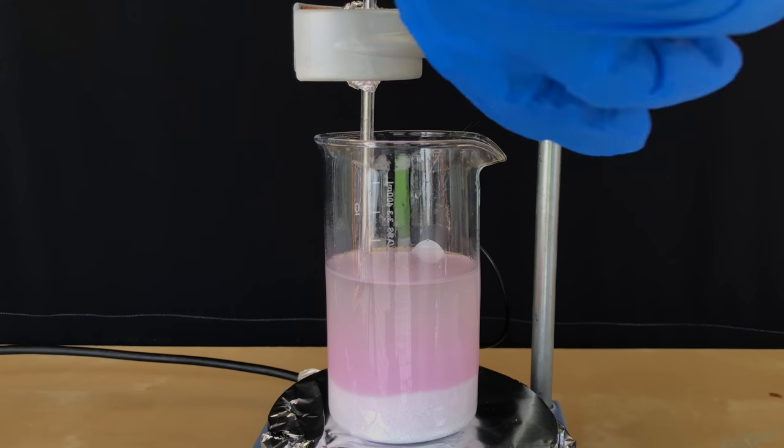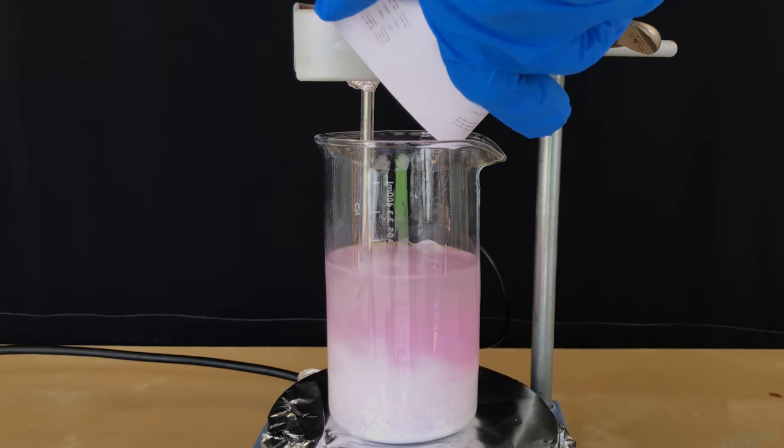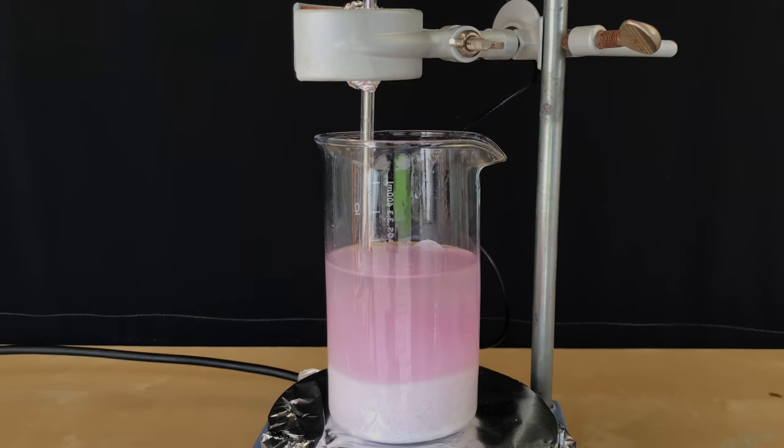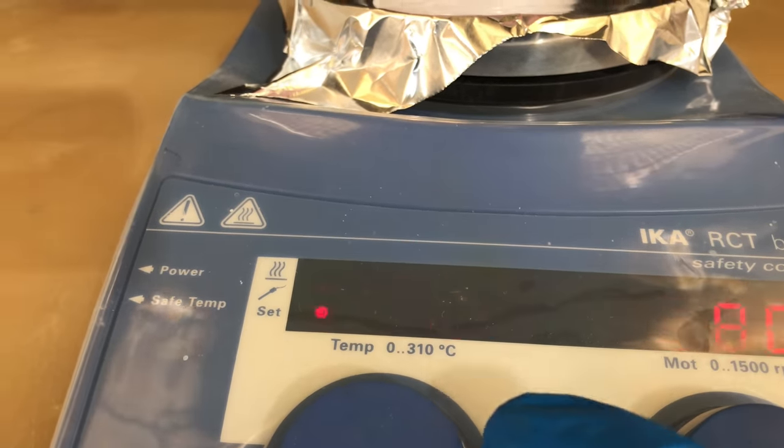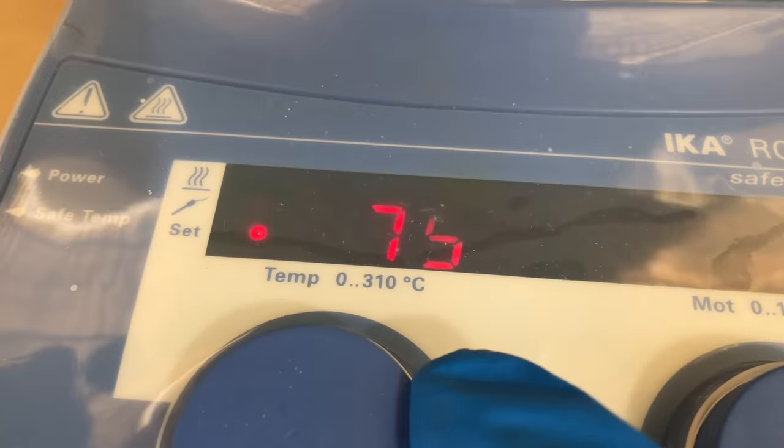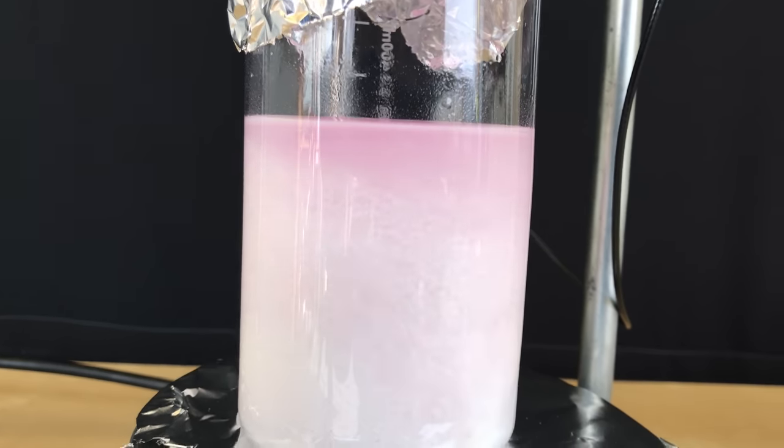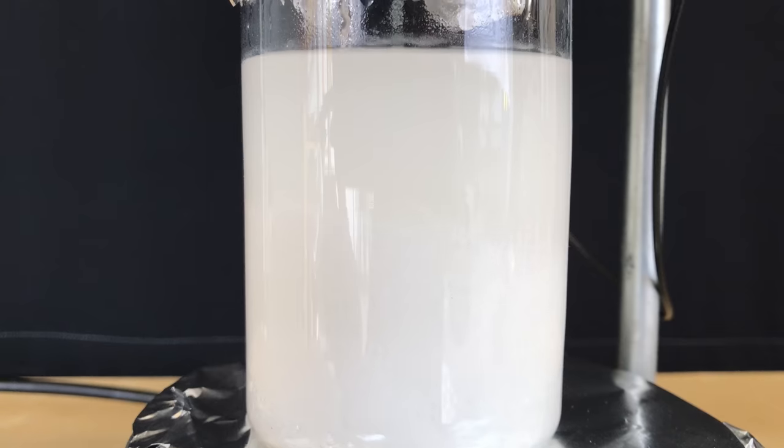For whatever unexpected reason, the solution turned pink after adding the carbonate. If you know why, I'd be pleased if you write a comment. To monitor and control the temperature, an electric thermocouple was inserted into the beaker. We needed to maintain the temperature between 75 and 80 degrees Celsius for 90 minutes under heavy stirring.